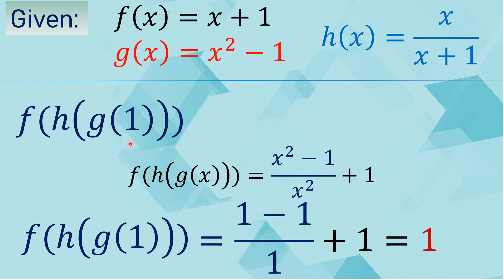Let us solve f of h of g of 1. We already have the function, and we are just going to substitute x with 1. We have 1 squared minus 1, which is 0. So 0 divided by 1 squared is 0, and 0 plus 1 is 1. So the answer is 1.